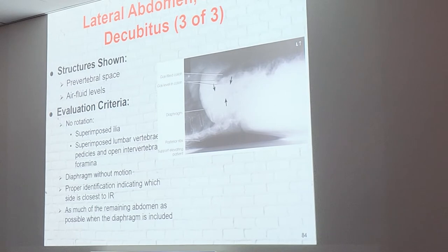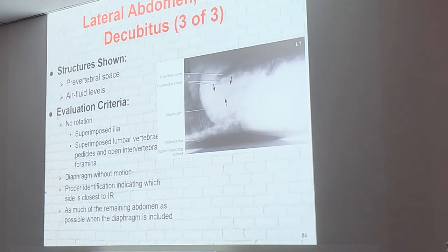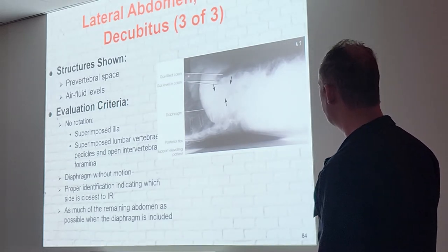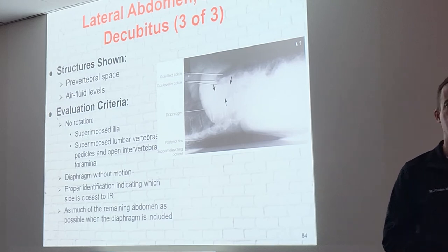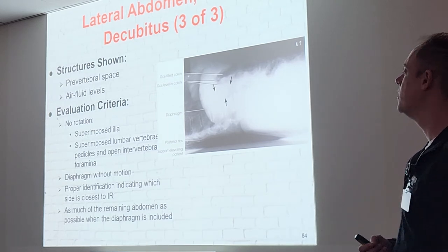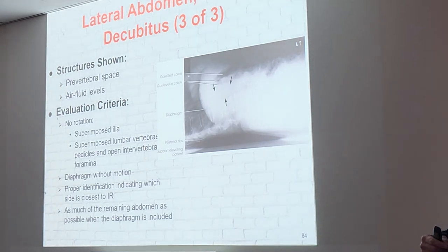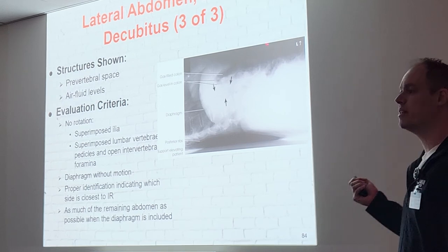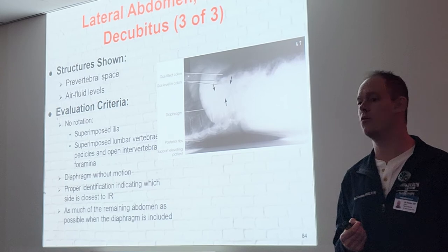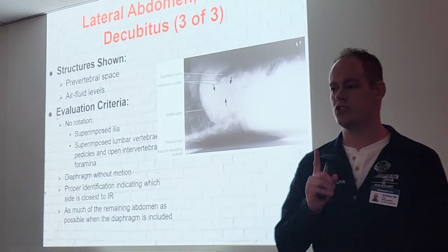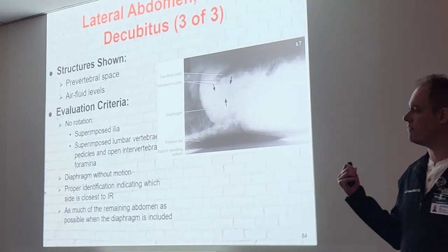We want to see the pre-vertebral space — the area surrounding the spine — and those air-fluid levels. Air will be toward the anterior surface; fluid falls toward the spinal area. We want superimposed ilia, superimposed lumbar vertebrae pedicles, open intervertebral foramina, and the diaphragm without motion — achieved by taking the exposure on expiration. Every abdominal x-ray is expiration only. We need proper identification indicating which side is closest to the IR — mark the side that is up. For dorsal decubitus you have the choice of right or left; only the left lateral decubitus requires left.